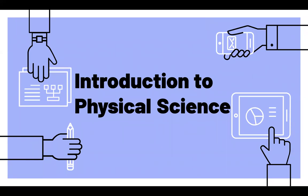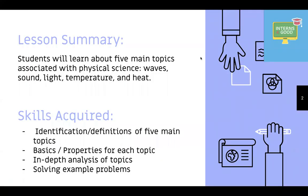Hello, today we will be learning about physical science. As a lesson summary, you will be learning about five main topics associated with physical science: waves, sound, light, temperature, and heat. The skills acquired are going to be identifying and learning definitions of those five main topics, their basics and properties, in-depth analysis, and solving example problems.